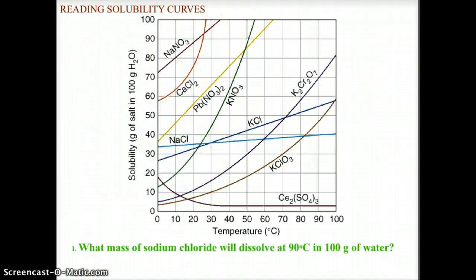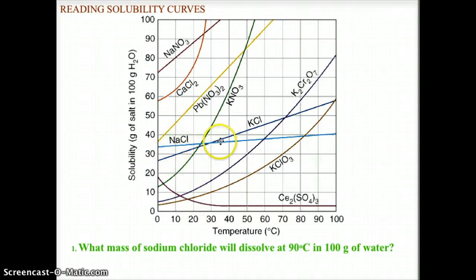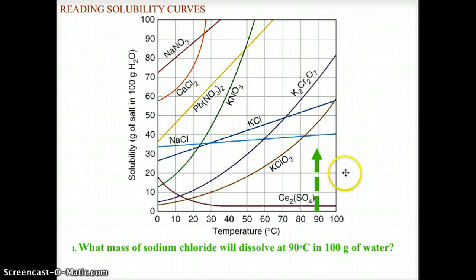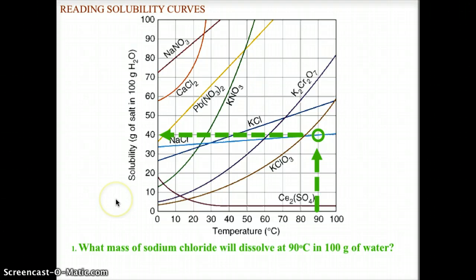Now let's try some problems on your own. The first practice question: what mass of sodium chloride will dissolve at 90 degrees Celsius in 100 grams of water? Pause the video, determine your answer, then check. The sodium chloride curve runs through the middle of the chart. Going to 90 degrees Celsius and reading back to the y-axis, we get 40 grams of solute in 100 grams of water.